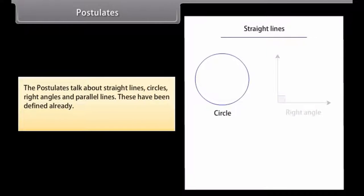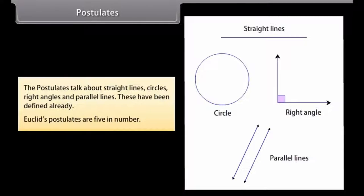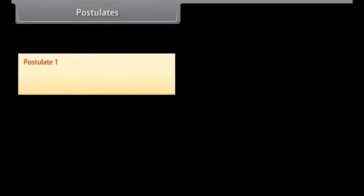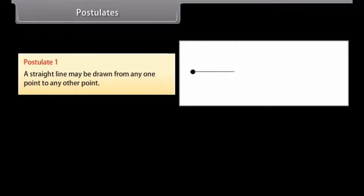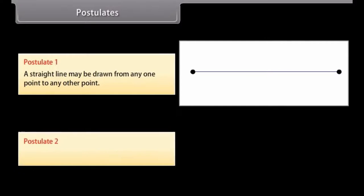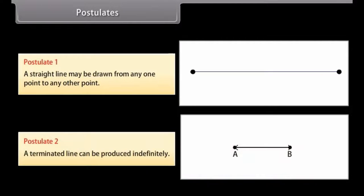Postulates. The postulates talk about straight lines, circles, right angles and parallel lines. These have been defined already. Euclid's postulates are 5 in number. First postulate is: A straight line may be drawn from any one point to any other point. Postulate second is: A terminated line can be produced indefinitely.